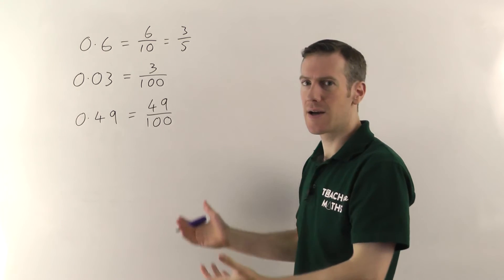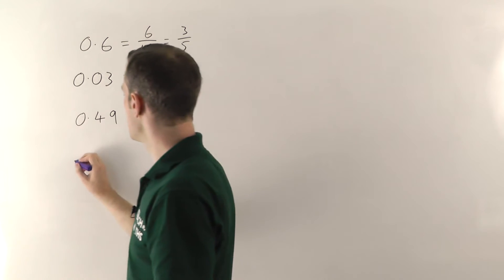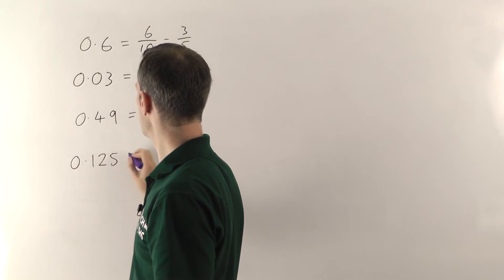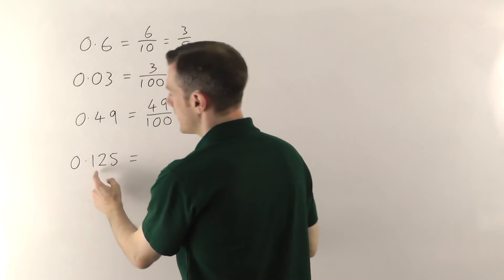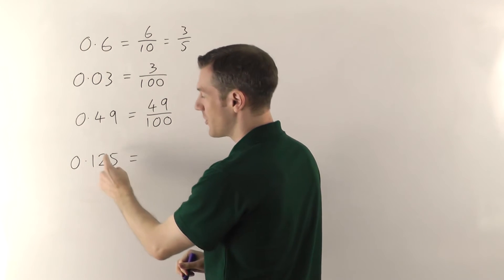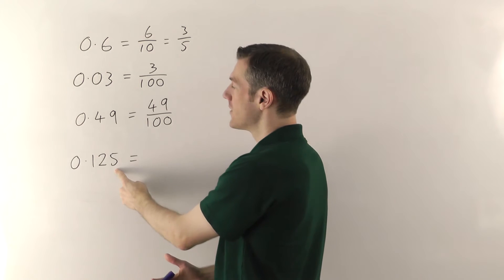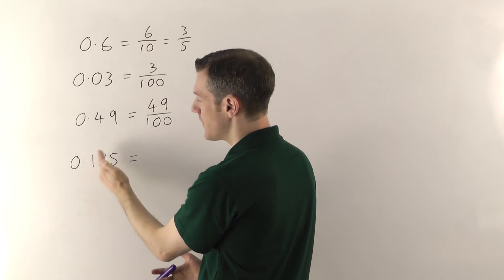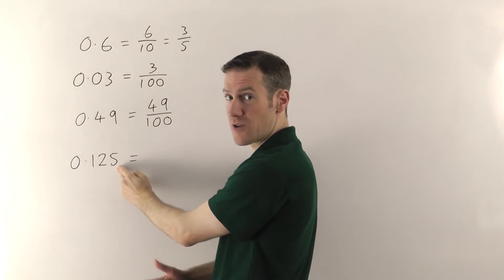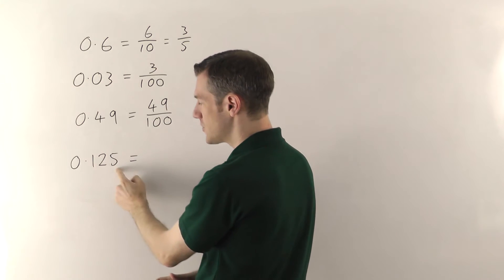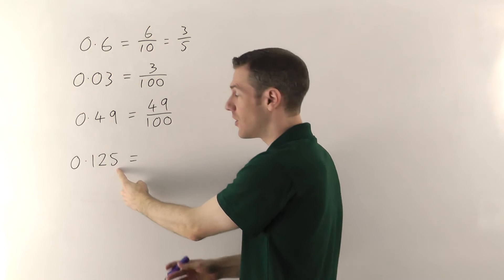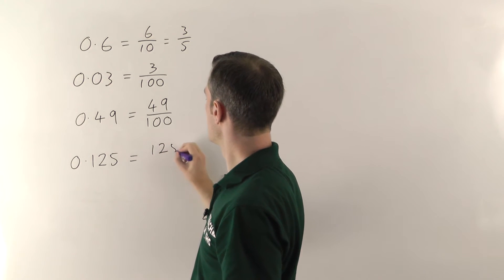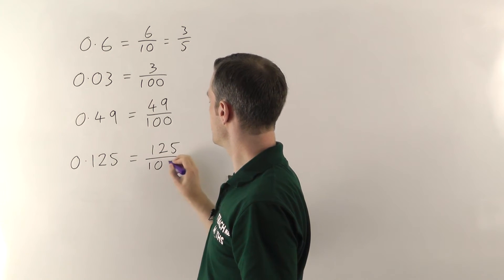Right, let me try a slightly harder one. If we have 0.125, this one does come up quite a lot as well. Now, this is the tenths column, the hundredths column, the thousandths column. So if you remember what I said, it's the column furthest to the right that matters. You just write it all over that. So this would be a hundred and twenty-five thousandths because that's in the thousandths column. A hundred and twenty-five over a thousand.